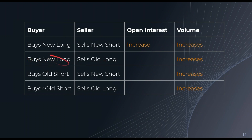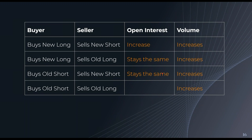In the second case, a buyer is buying a new long from a seller who's selling an old short. One participant has left the market and one has entered, so open interest stays the same. The next example is similar — a seller sells a new short and the buyer is buying an old short — open interest stays the same. In the last case, a buyer buys an old short and a seller sells an old long. These cancel each other out, both participants leave the market, and therefore open interest decreases.